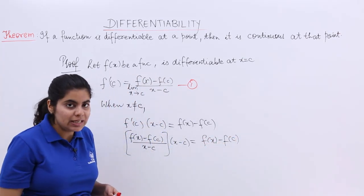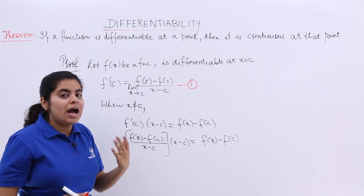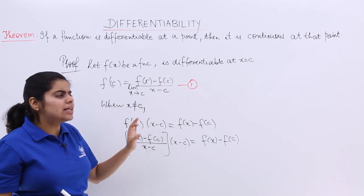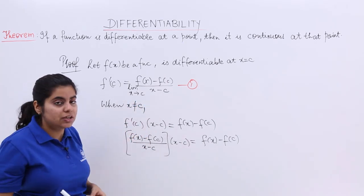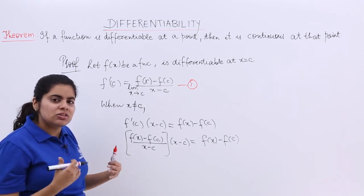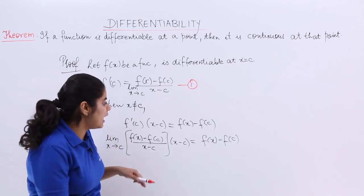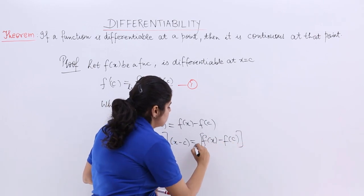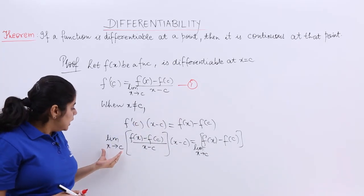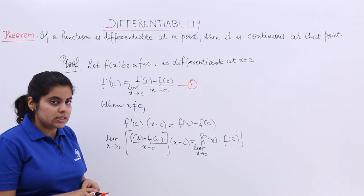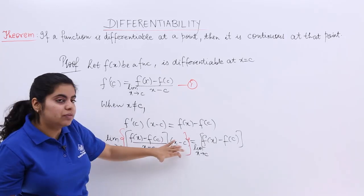So to recap: I assumed a function f(x), assumed it to be differentiable at x = c, and I said f'(c) has that limit formula. Now substituting the formula for f'(c) back in, the (x minus c) terms cancel on the left, and we get f(x) minus f(c) on the right. Now what we can do is take limits on both sides. Taking the limit as x tends to c on both sides of the equation.